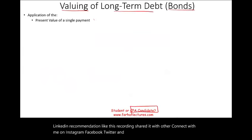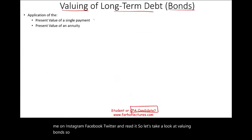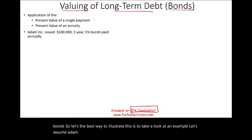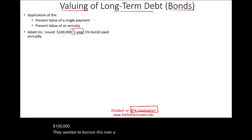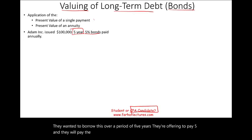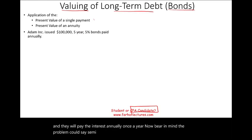Let's take a look at valuing bonds using an example. Let's assume Adam Company issued $100,000, five-year, 5% bonds paid annually, meaning the interest is paid once a year. In simple terms, Adam wants to borrow $100,000 over five years, offering to pay 5% interest annually. Note that the problem could say semi-annually, and I'll show you the difference that makes in how you approach the problem.